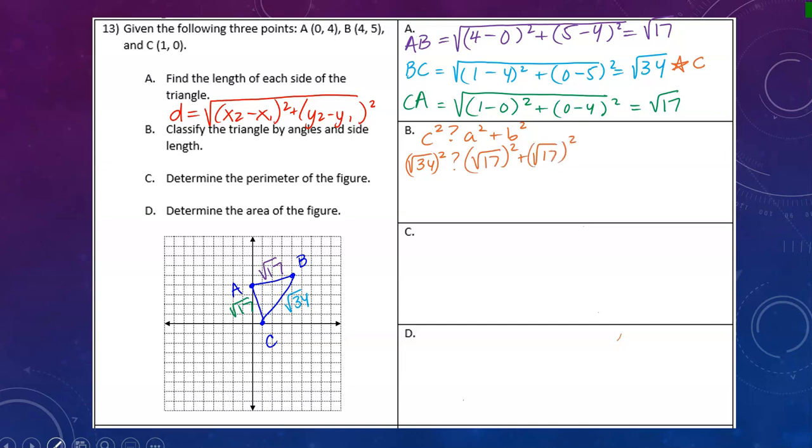The squares and square roots cancel each other out, so I end up with 34 equals 17 plus 17. Since 17 plus 17 equals 34, this is a right triangle. So it's a right isosceles triangle.